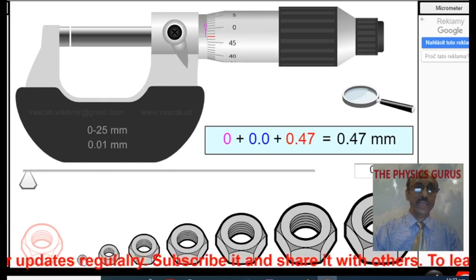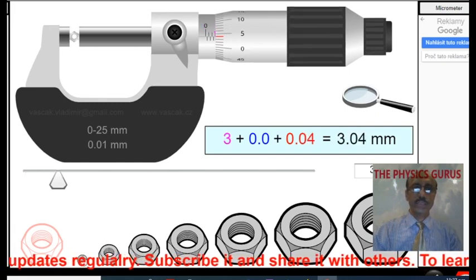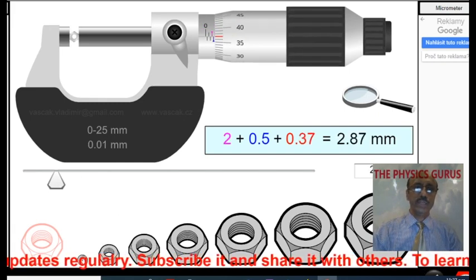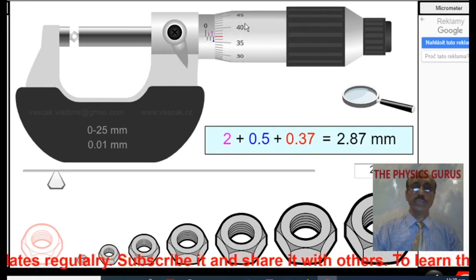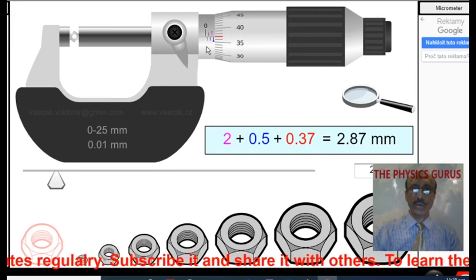Now let me show you how we will take the reading. There are two steps: one is to take the main scale reading or the sleeve reading, and then observe the circular scale reading or the thimble scale reading.